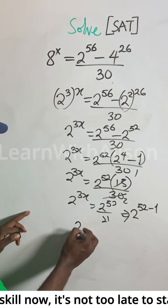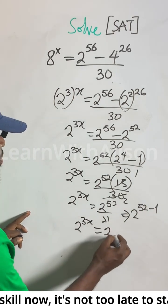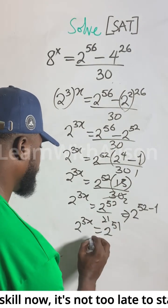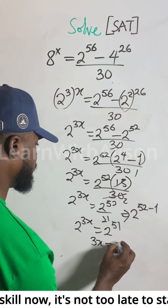On the left-hand side, we have 2 to the power of 3x equals 2 to the power of 51. When the bases are the same, we equate the exponents. So 3x equals 51.